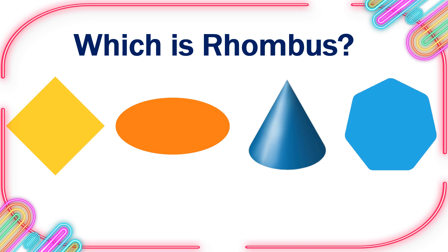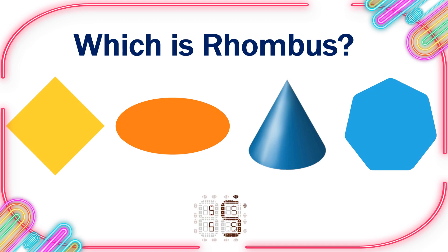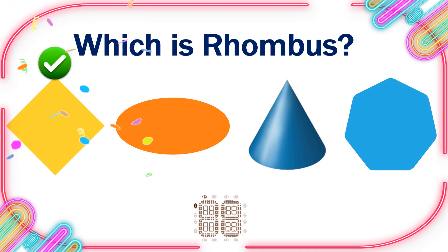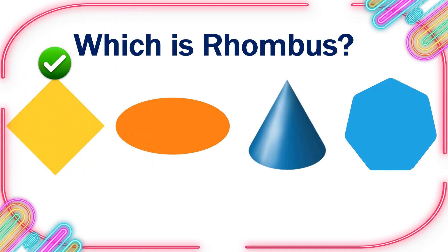Which is Rhombus? 10, 9, 8, 7, 6, 5, 4, 3, 2, 1, 0. This is the right one.